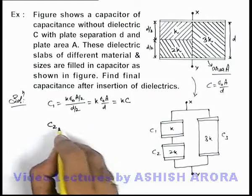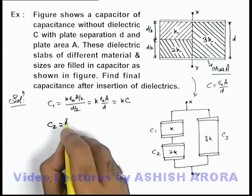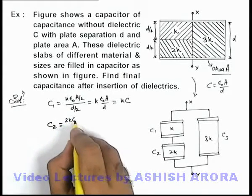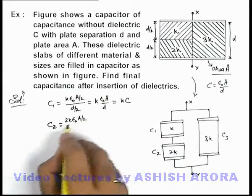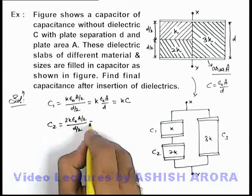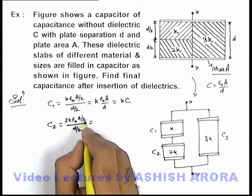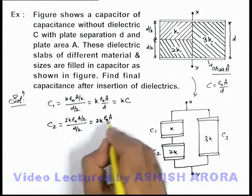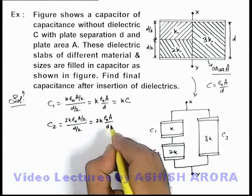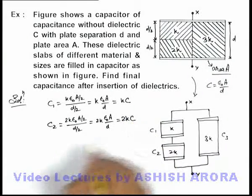Similarly, we calculate the value of C2. This will be 2k·ε₀ multiplied by A/2 divided by d/2, which simplifies to 2k·ε₀·A/d. So C2 can be written as 2kC.